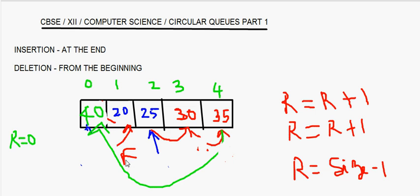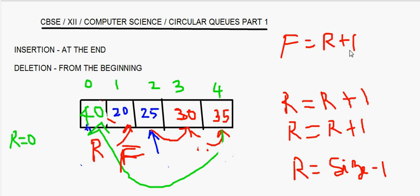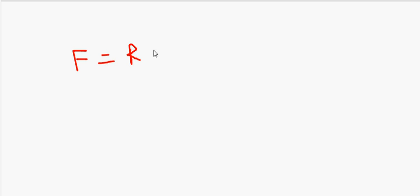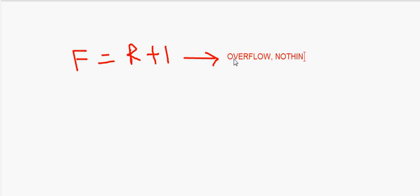Here we cannot do any more insertions. If there is a condition like front is equal to rear plus 1, that means the queue is full — overflow. Nothing can be inserted, there is no space.